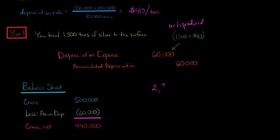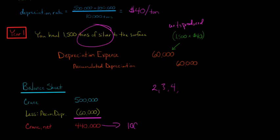In year two, year three, year four, each year we ask how many tons of silver did we bring to the surface, then multiply that amount by $40 per ton. We stop when the book value gets down to $100,000 — that is our salvage value. We're not going to depreciate the asset below $100,000. So ultimately over the life of this asset, we will take $400,000 in total depreciation, getting down to our salvage value of $100,000.